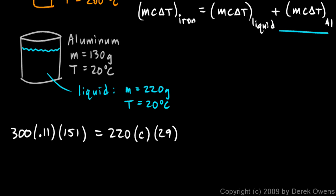And then we have plus MC delta T for the aluminum. The mass of the aluminum is 130. C, the specific heat for the aluminum, is 0.22. And the delta T for the aluminum is also 29 because it also starts at 20 and heats up to 49.